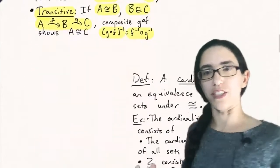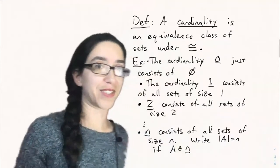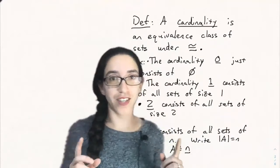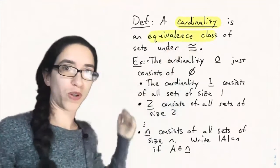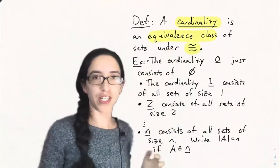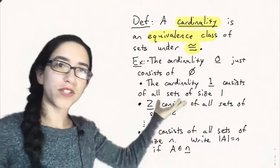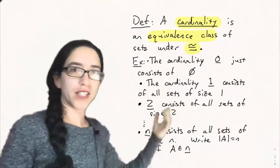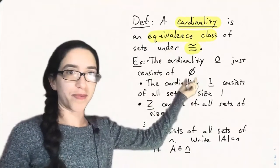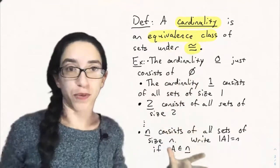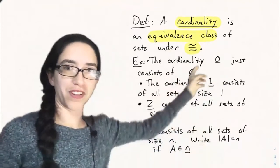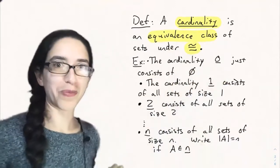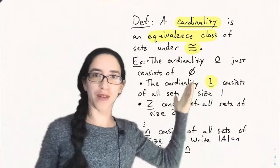And so when we have an equivalence relation, we want to look at equivalence classes. And the equivalence classes under this relation are called cardinalities. A cardinality is an equivalence class of sets under bijection. So let's look at some examples of cardinalities. Let's look at the cardinality of the empty set. The empty set is only in bijection with itself and no other sets. So we'll call that cardinality zero, with a little underline to distinguish it from the number zero. Cardinality zero just consists of the empty set.